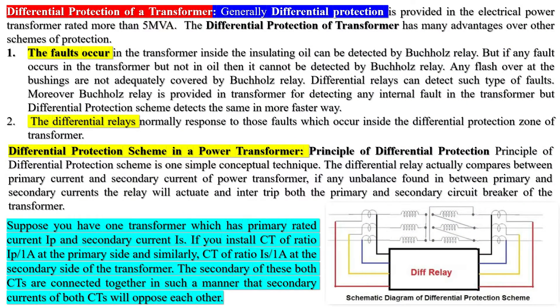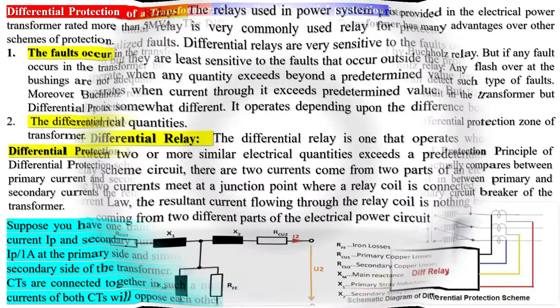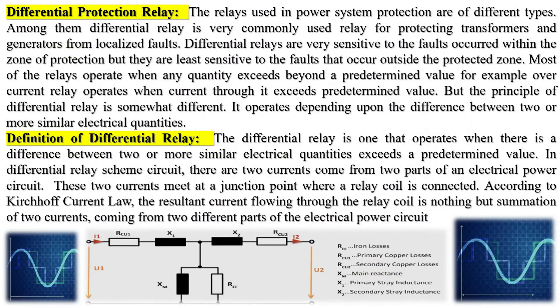Differential protection operates on the principle of current conservation, where the incoming current must equal the outgoing current. However, a key distinction arises when dealing with transformers: the currents at the high-voltage HV and low-voltage LV sides are not equal. Therefore, we must apply a transformation ratio to calculate the differential current between the HV and LV windings.